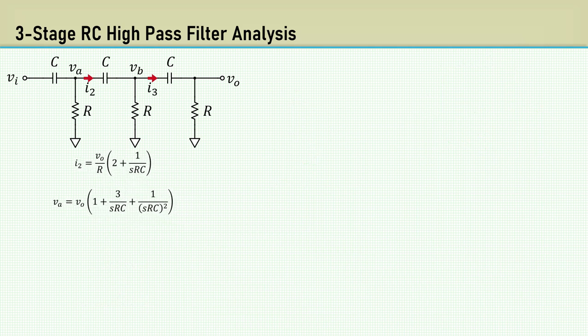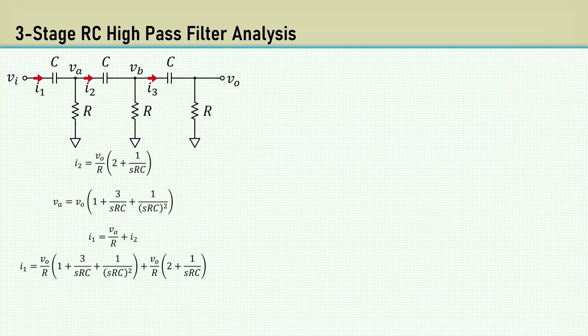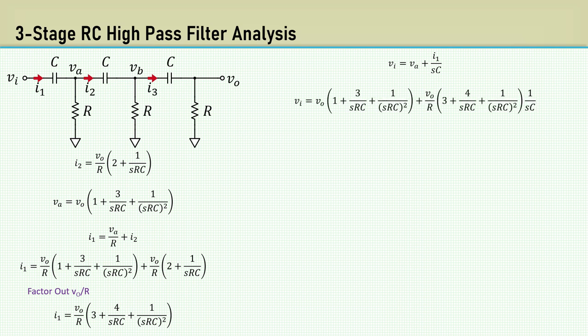Continuing, we can say I_1 equals V_A over R plus I_2. Then substituting the expressions above for V_A and I_2. Factor out V_0 over R. We can write V_I equals V_A plus I_1 over SC. Now substituting the terms we have for V_A and I_1.